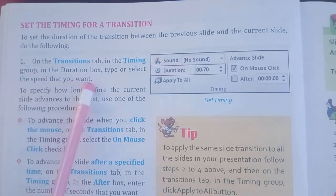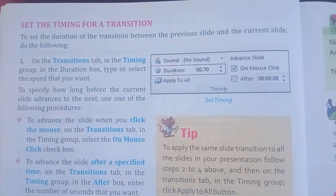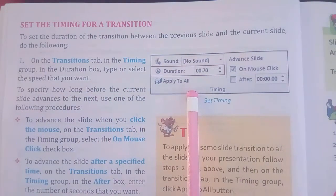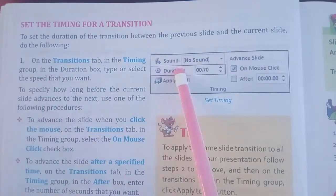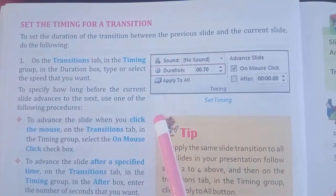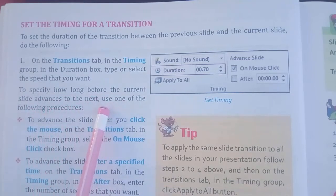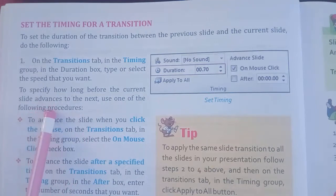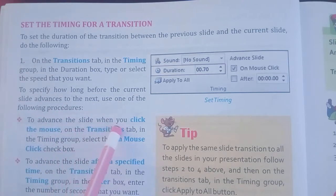To set the timing, follow these steps. Step 1: on the Transition tab, in the Timing group, in the Duration box, type or select the speed that you want. When you click on the Transition tab, you will see the Timing section with a Duration box where you can set the duration.